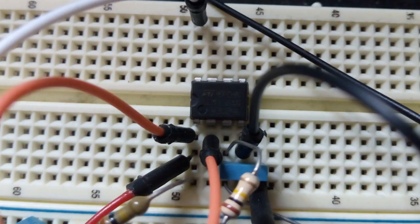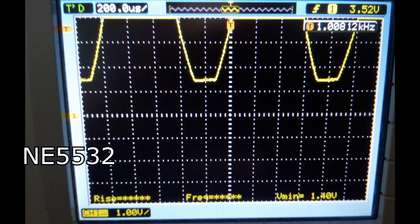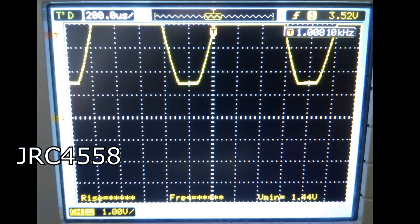First the legit LM358. Visible is how the lower half gets clipped around 0 volts as expected. The 5532 gets clipped nicely around 1.40 volts also as expected. The 4558 is quite similar. Nothing special to see here.